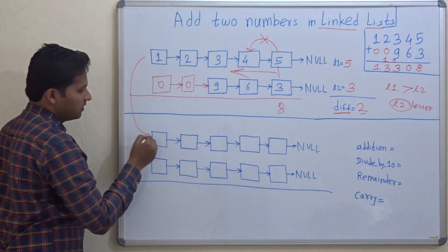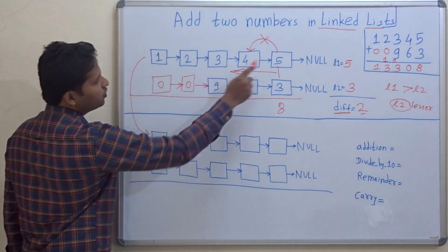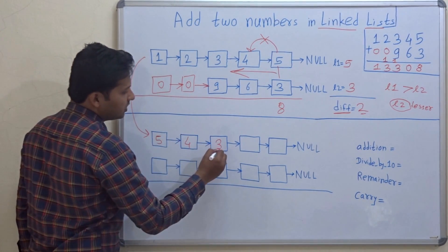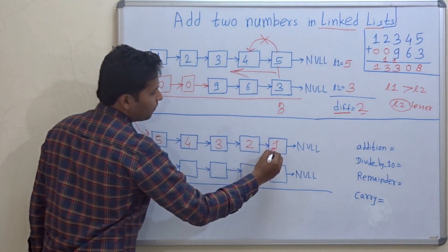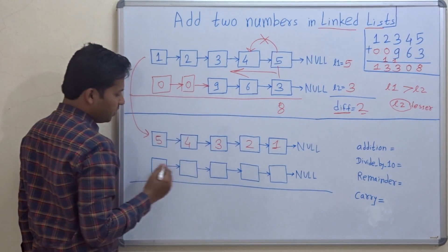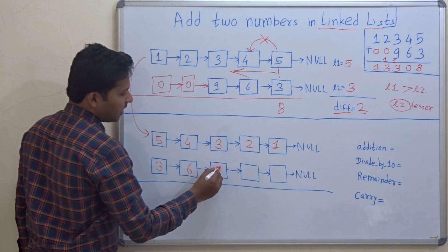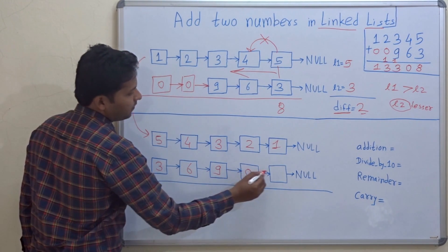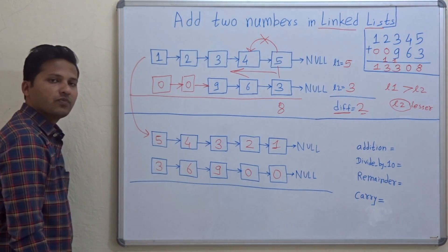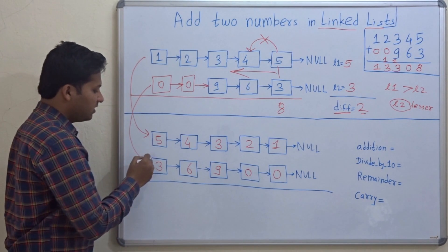Which is why we are adding one more operation: we have to reverse these two linked lists. Because if we want to add from this direction, we must reverse both lists since we cannot go backwards in a singly linked list. Let's reverse. So the first linked list 1-2-3-4-5 becomes 5-4-3-2-1, and 0-0-9-6-3 becomes 3-6-9-0-0. We have reversed the two linked lists.